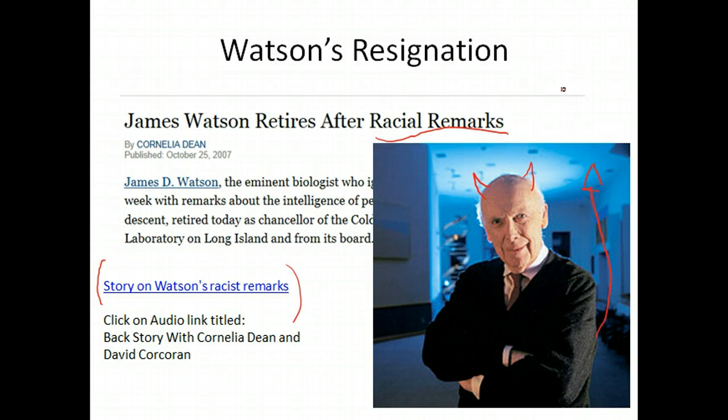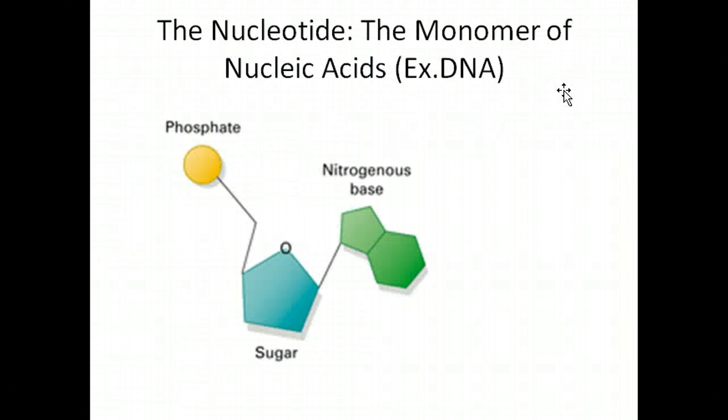When talking about the structure of DNA, you really can't have a discussion unless you're talking about the nucleotide. The nucleotide is the monomer of DNA. When we talk about DNA, we're talking about a nucleic acid. The nucleic acid is the polymer form; the nucleotide is the monomer that makes up this polymer.